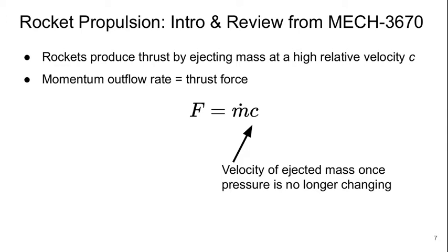Rockets produce thrust by ejecting mass at a high relative velocity c, and from Newton's second law the momentum outflow rate is the thrust force. So the thrust F is the mass flow rate of the propellant ṁ times this velocity c. And the velocity here is the velocity of the ejected mass once the pressure is no longer changing. We'll come back to that in the next couple of lectures to figure out exactly what that means.